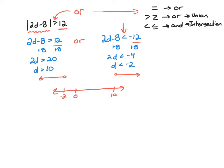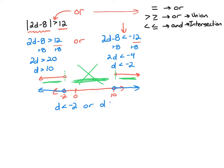Since it's an or statement, only one or the other has to be true. I'm looking for parts of the graph where I have at least one graph above the number line. To the left of negative 2, I have at least one graph — the arrow going left from negative 2 — so that's part of my solution. In between the two points, I have nothing, so that can't be part of my solution. To the right of 10, I have at least one graph, so that's part of my solution. So the solution is d is less than negative 2, or d is greater than positive 10.